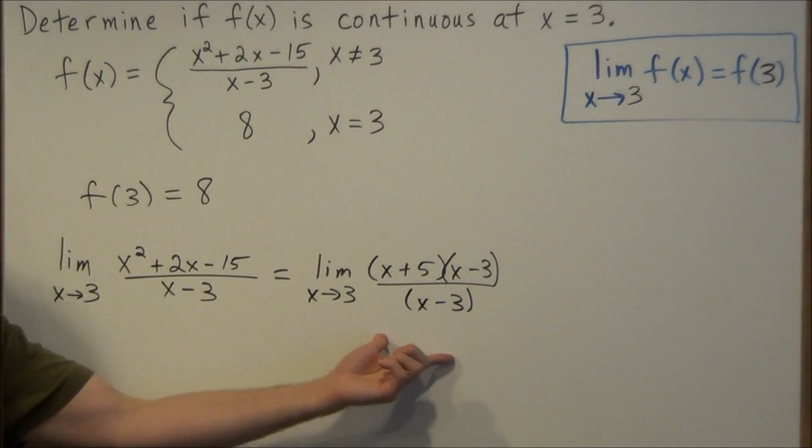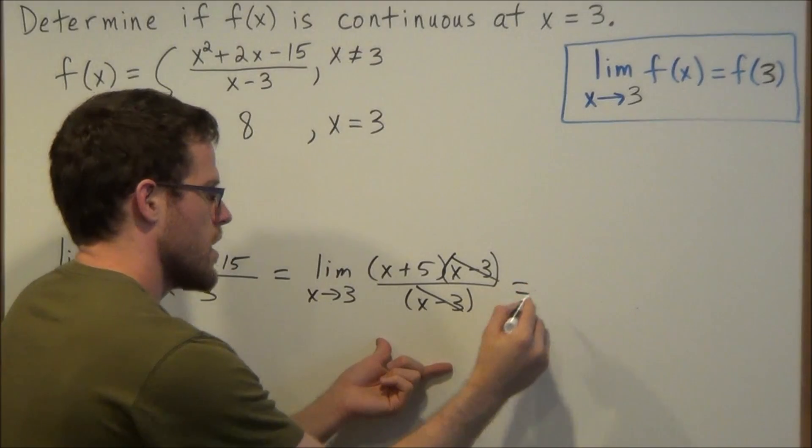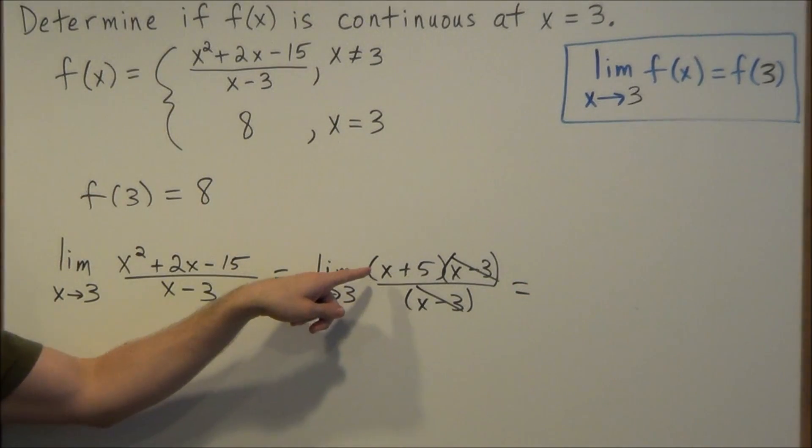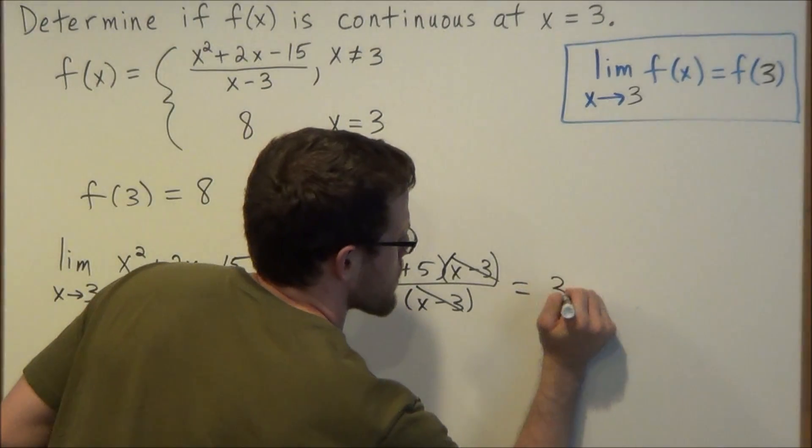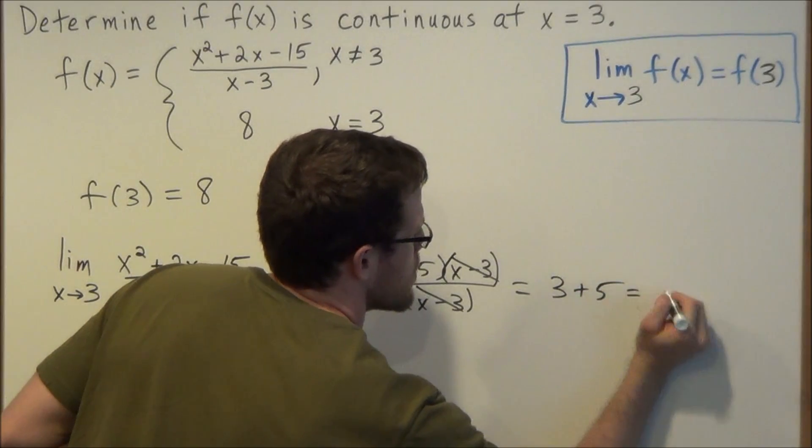So to simplify this limit now, we cancel out the common factors and then we plug in for x. Instead of x plus 5, we have 3 plus 5 is equal to 8.